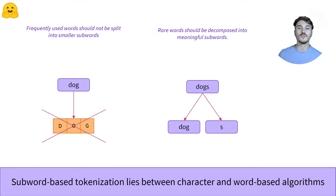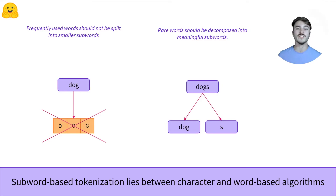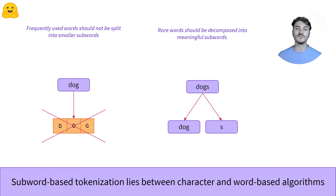An example is the word "dog." We would like our tokenizer to have a single ID for the word dog, rather than splitting it into characters d-o-g. However, when encountering the word "dogs," we would like our tokenizer to understand that at the root, this is still the word dog, with an added "s" that slightly changes the meaning while keeping the original idea.